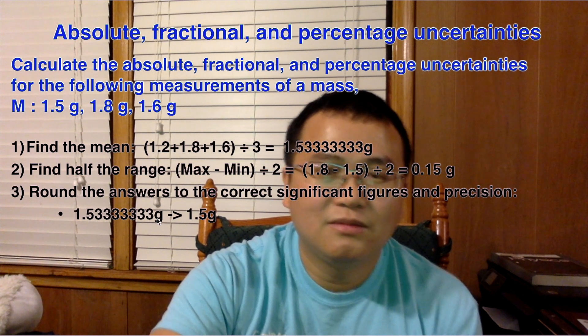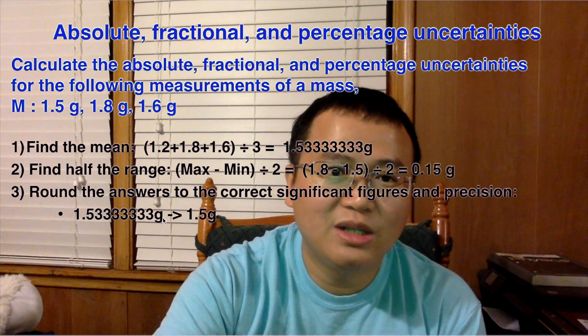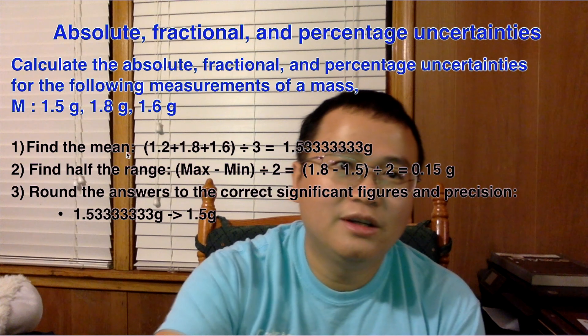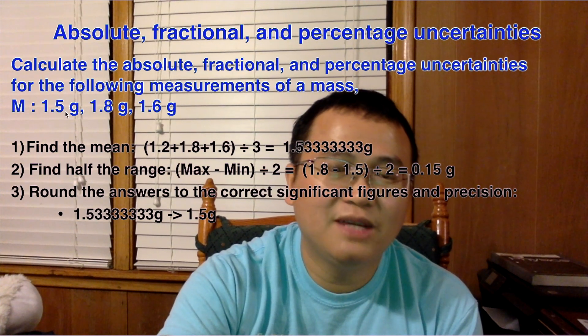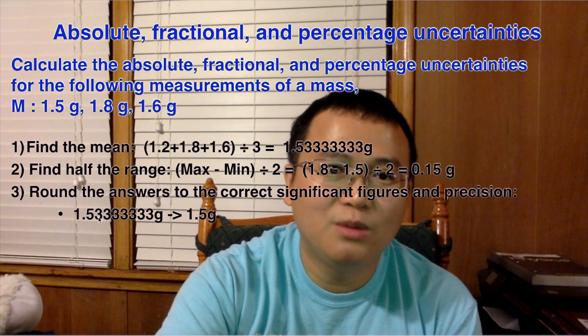We know that's not quite correct, so we need to round that to 1.5 grams because if we look at our measurement, we notice that we only have two significant figures here, so there shouldn't be more than two.